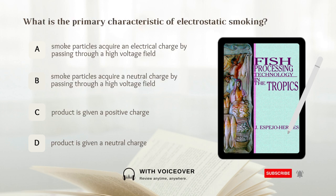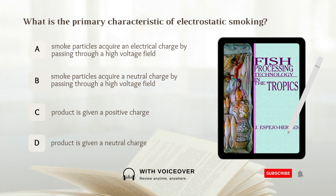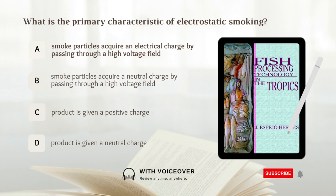What is the primary characteristic of electrostatic smoking? A. Smoke particles acquire an electrical charge by passing through a high-voltage field. B. Smoke particles acquire a neutral charge by passing through a high-voltage field. C. Product is given a positive charge. D. Product is given a neutral charge. Answer: A. Smoke particles acquire an electrical charge by passing through a high-voltage field.